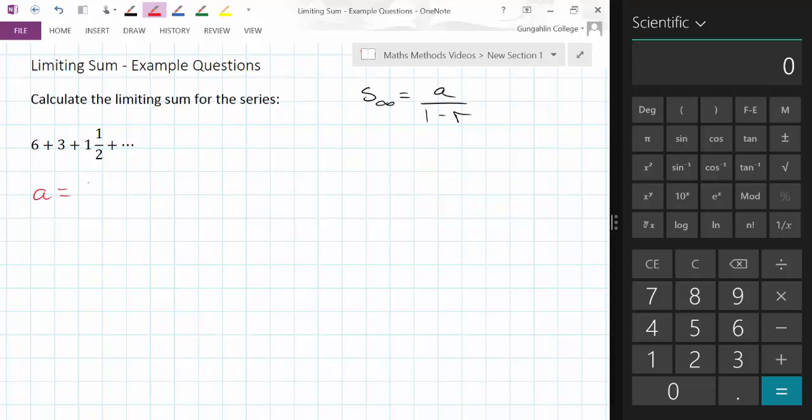In this particular case our first term is 6 and it looks like our common ratio is 1 half. 3 divided by 6 is a half. 1 and a half divided by 3 is a half. That's going to be our common ratio.